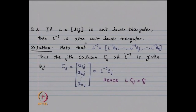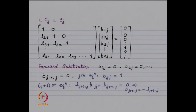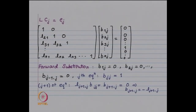Consider L to be a unit lower triangular matrix. Because it is unit lower triangular, the determinant of L equals 1 (the product of diagonal entries), and hence it is invertible. We want to show that L⁻¹ is also unit lower triangular. Write L⁻¹ as its columns: L⁻¹e₁, L⁻¹e₂, ..., L⁻¹eₙ. The j-th column cⱼ of L⁻¹ satisfies Lcⱼ = eⱼ. Our matrix L has 1s along the diagonal, 0s above the diagonal, and arbitrary entries below. Multiplying by the j-th column cⱼ = (b₁ⱼ, b₂ⱼ, ..., bₙⱼ)ᵀ gives the right-hand side eⱼ, with 1 at position j and 0 elsewhere.